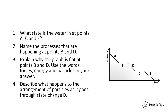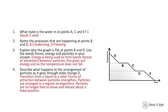Now have a go at answering these questions. For question one, C is a liquid and E is a solid. Name the processes happening at B and D: B is condensing, and D is freezing. Explain why the graph is flat at points B and D: energy is being used to form bonds between the particles, which gives out energy, so the temperature does not fall. For question four, describe what happens to the arrangement of particles during state change D: transitioning from liquid to solid, the forces of attraction between particles strengthen, particles are now arranged in a regular arrangement, and particles are no longer free to move — they vibrate about a fixed position.